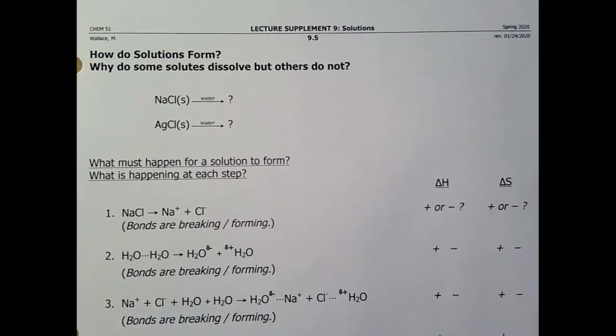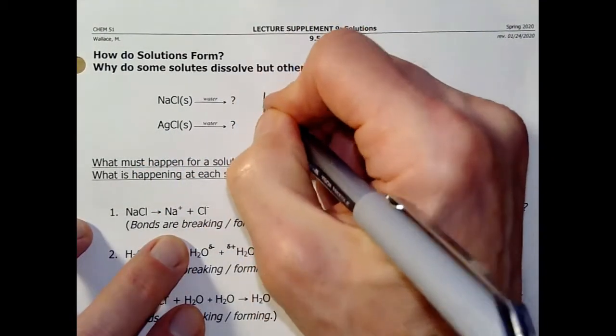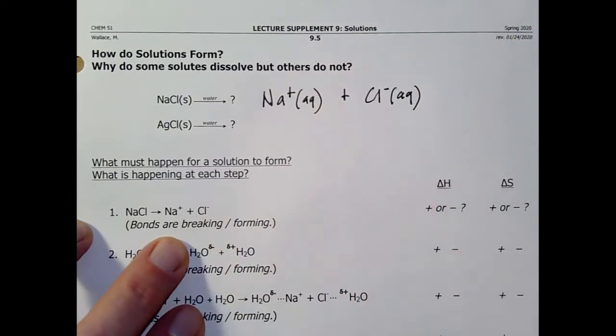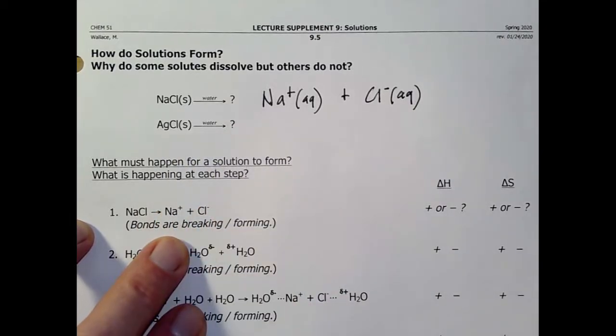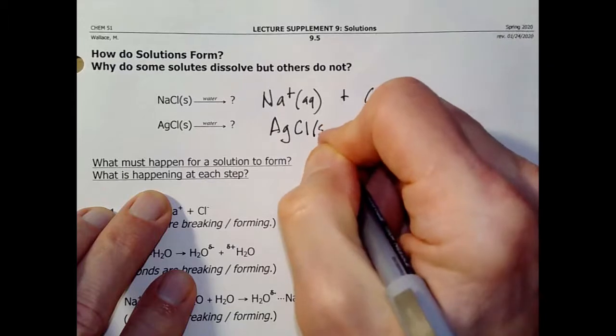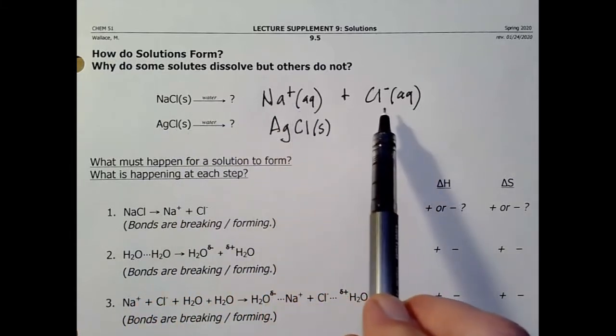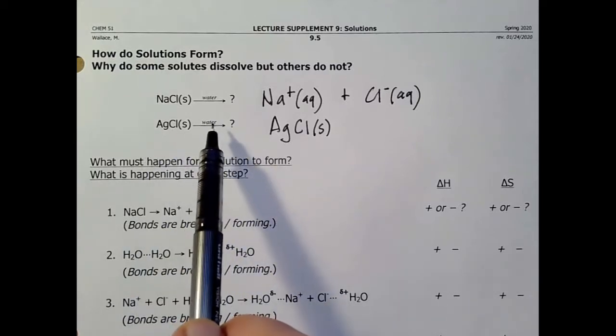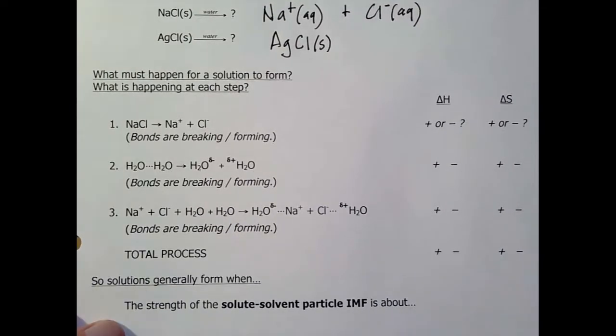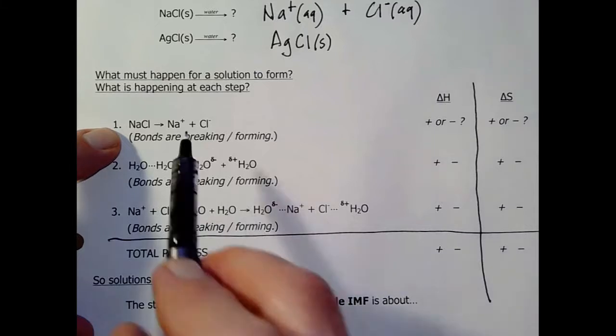And I want to think about the solution process. What has to break up, what has to stick together when a solution forms? Well, we've said from chapter 5, sodium chloride is water soluble. Put sodium chloride in water, I get sodium ions, and I get chloride ions. If you put silver chloride in water, and you go back and look at our solubility rules, here's what you get. AgCl solid. It does not dissolve. So what we have to think about is these were sticking together, and now this is sticking to water, and this is sticking to water.